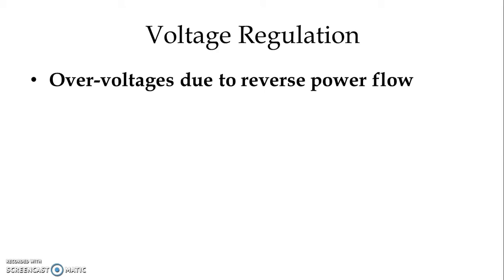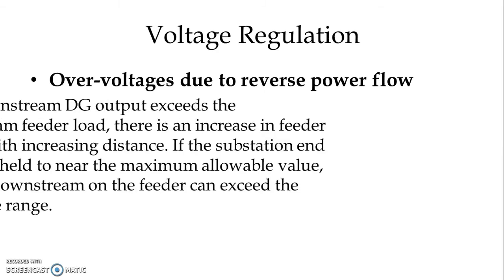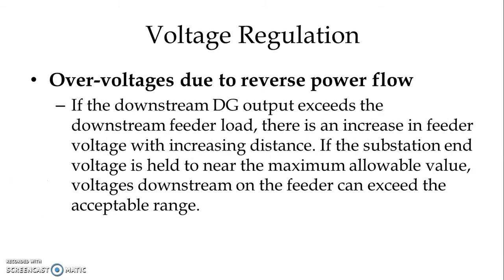One of the issues is over-voltage due to reverse power flow. If the downstream DG output exceeds the downstream feeder load, there is an increase in feeder voltage with increasing distance. If the substation end voltage is held to near the maximum allowable value, voltage downstream on the feeder can exceed the acceptable range.